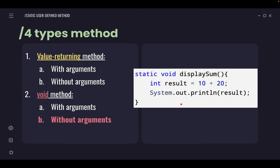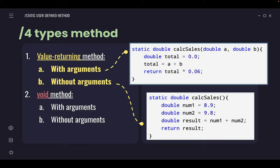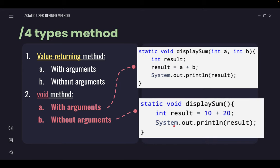So basically, that is it. The difference between four types of methods with two types of static user-defined methods. Look here—we saw two with double, one has argument, one doesn't have argument, and both need to return. Return value. Next, void method—both use void. One has argument, one doesn't have argument. And both use output statement. That's all to cover, generally, how methods work.